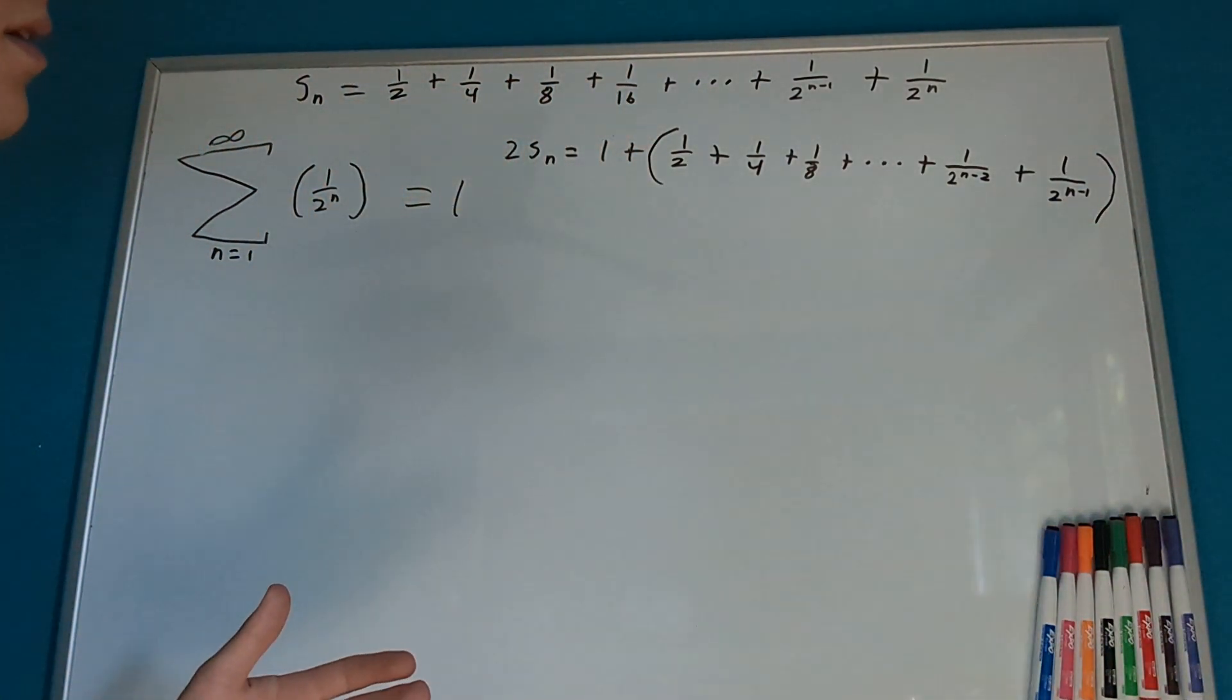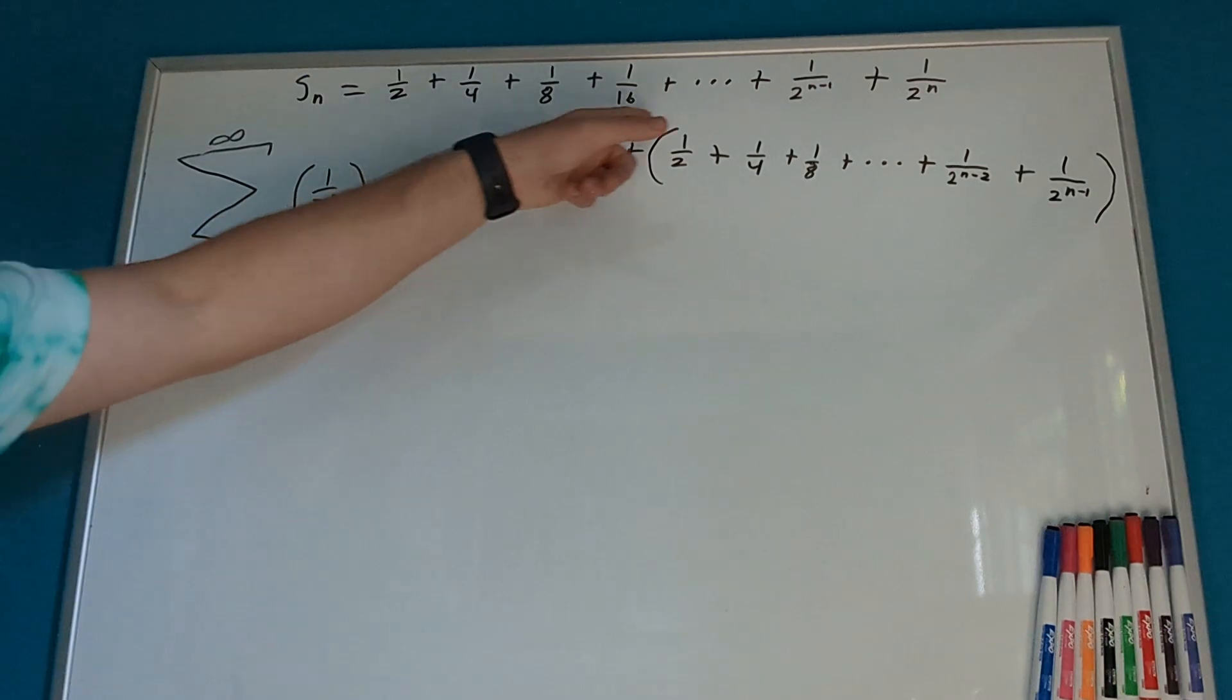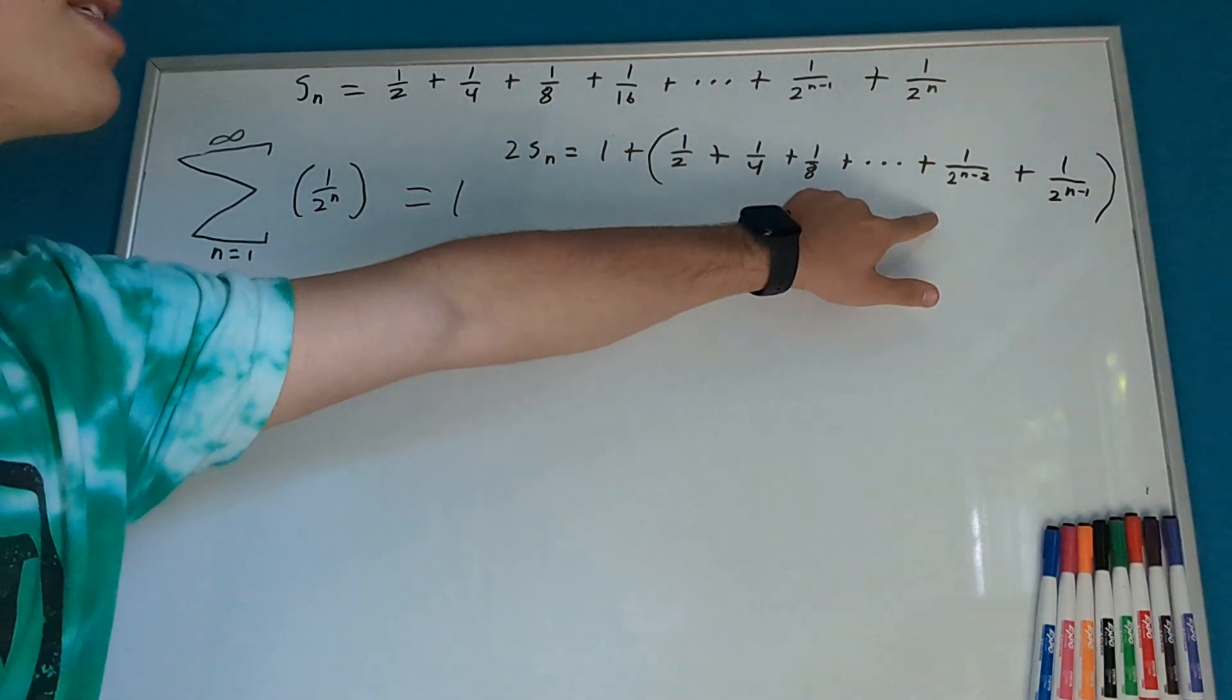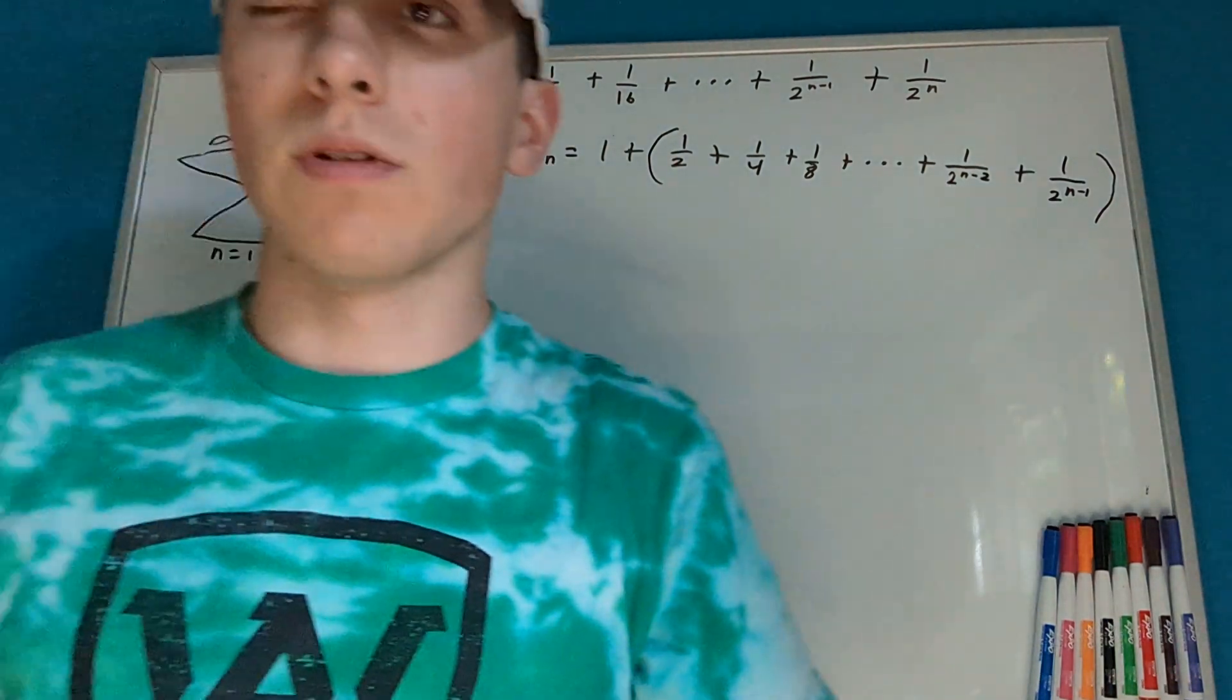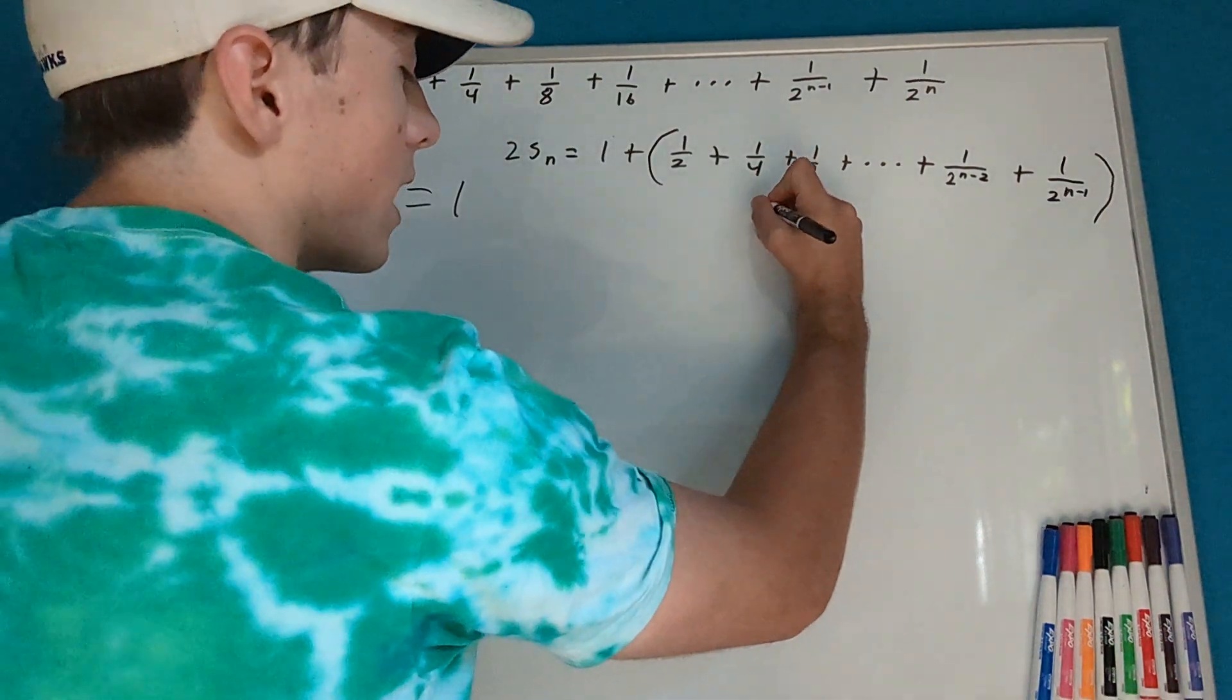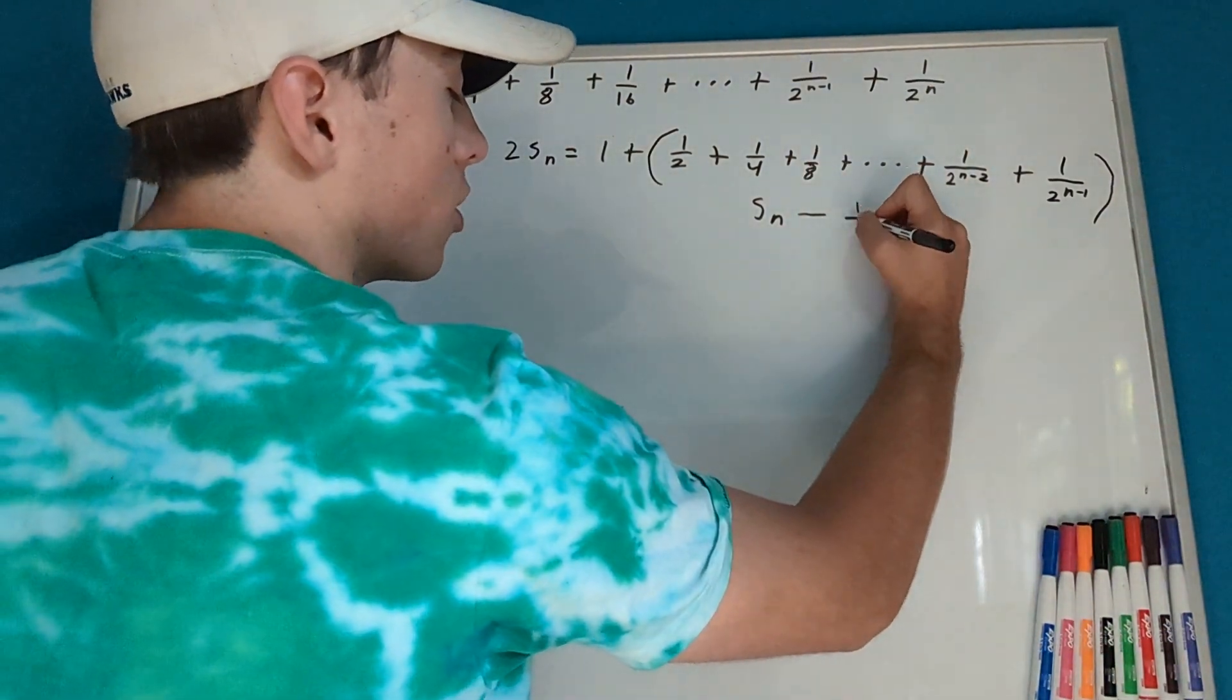Does it look familiar at all? Well, hopefully the answer is yes, because this right here is this whole thing, except for one little tiny change. This entire series right here is exactly this series, except this series does not have plus 1 over 2 to the n. So, what can we say that this series then equals? Well, we can say that this series equals s_n minus 1 over 2 to the n, because it doesn't include that.